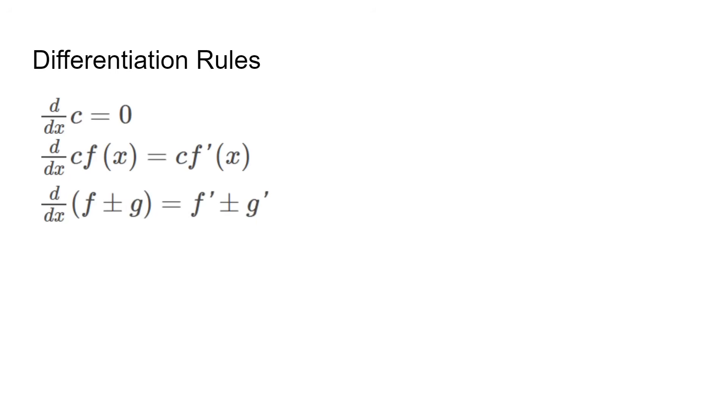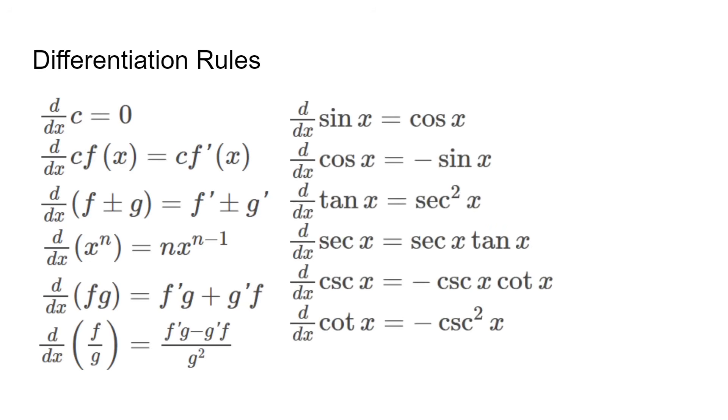Next is the power rule, which we can use when dealing with something like x to the power of 5. The product and quotient rules deal with multiplying and dividing. There are also trig rules, and e to the power of x is just itself, and ln x is 1 over x.